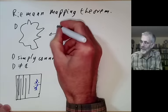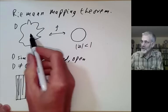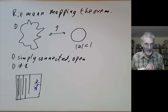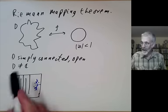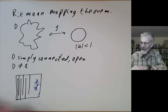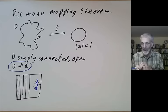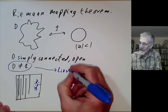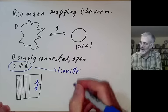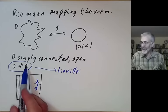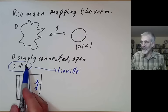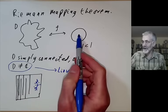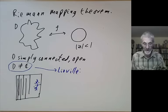Being isomorphic means you should have a holomorphic function F from D to the unit disk whose inverse is also holomorphic. There's a funny exception: D can't be the whole of ℂ. This follows from Liouville's theorem, which says that any bounded map on the complex numbers must be constant. So if you have a map from all of ℂ to the unit disk, it must be constant and can't be an isomorphism.